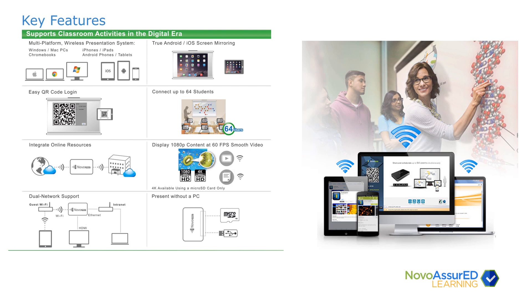Some of the key features of the Novo Pro: it does support all five major operating systems — Windows, Mac, iOS, Android, as well as Chromebook. If you're only showing one display at a time, it will allow you to do true Android or iOS screen mirroring using Miracast and AirPlay. Easy QR code login for students with their mobile devices, and you can have up to 64 students connected into a session at any one time. Teachers can easily integrate their online resources and show those resources at 60 frames per second for 1080p content or 30 frames per second for 4K content.